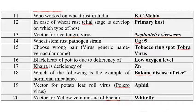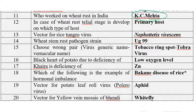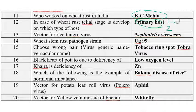Who worked on wheat stem rust in India? Among the given options, K.C. Mehta. For wheat stem rust, the TLL stage develops on the primary host. Wheat stem rust requires two hosts: host number one is wheat (primary host) and host number two is Barberry (secondary host). The uredial stage and telial stage happen in wheat, the primary host.